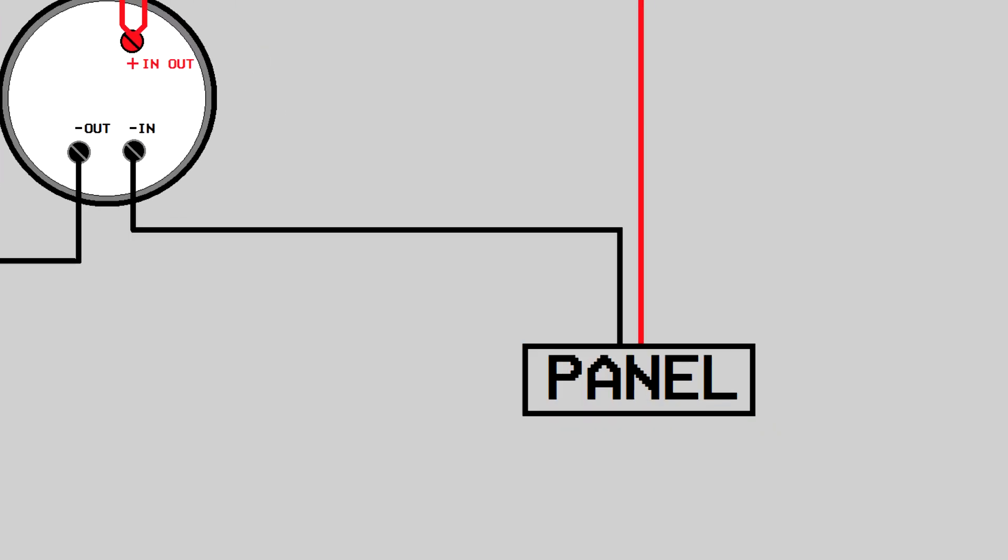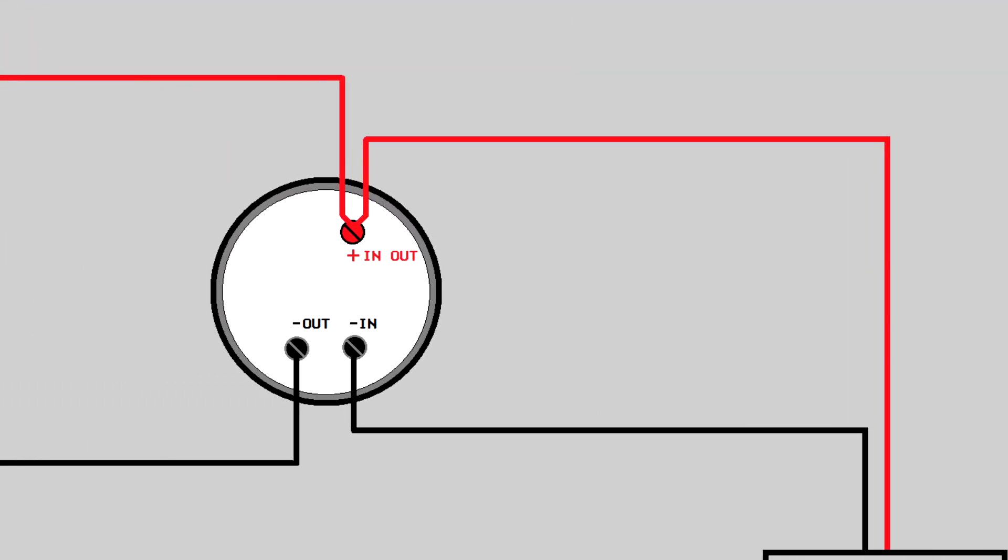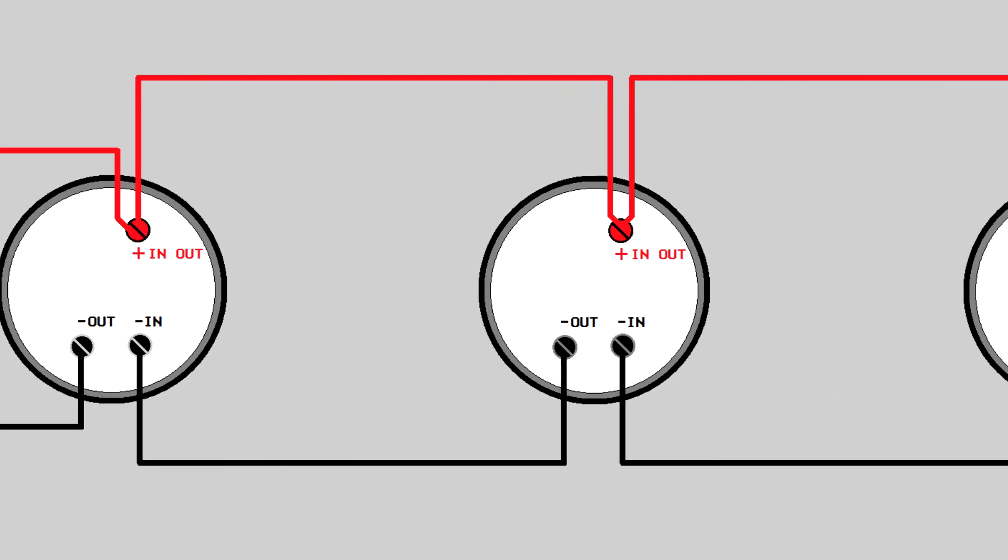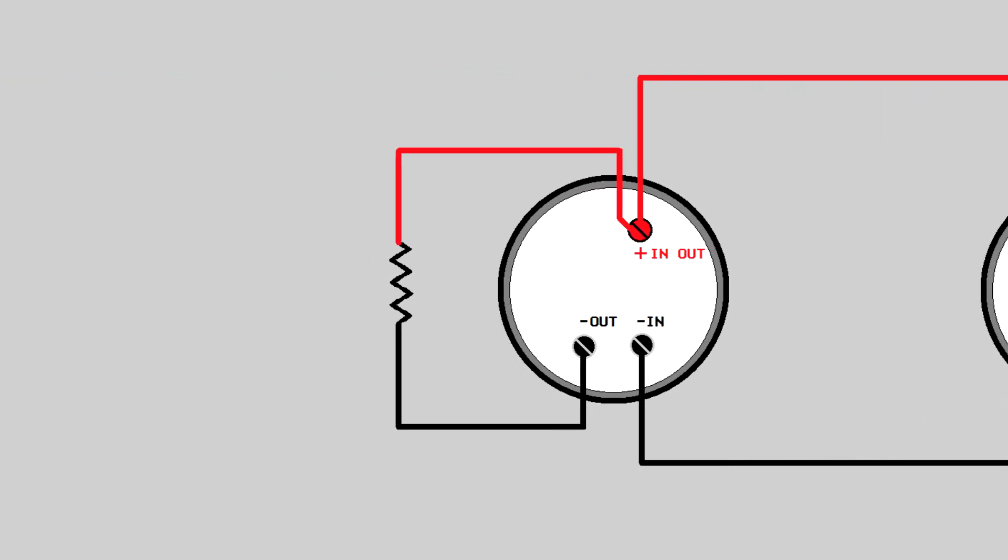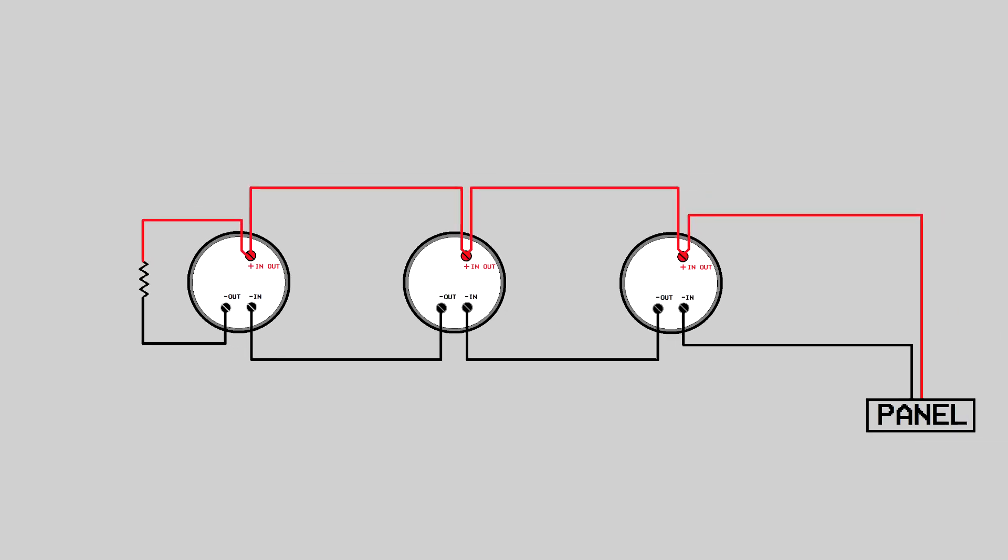The incoming negative wire from the panel will be connected to the terminal labeled negative in. The wire going to the next detector in the line will be connected to the negative out terminal. This is done for a fail safe mechanism. Let me explain that in detail.